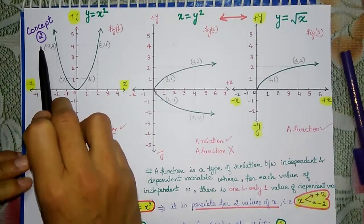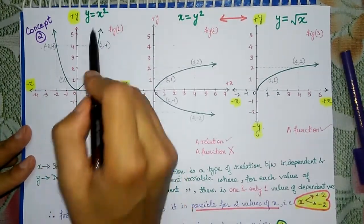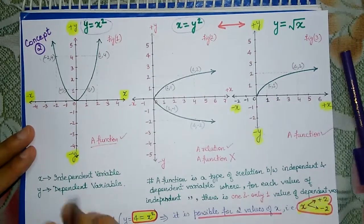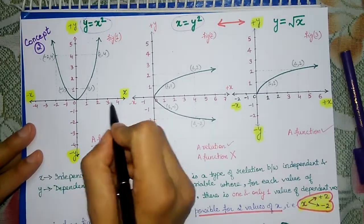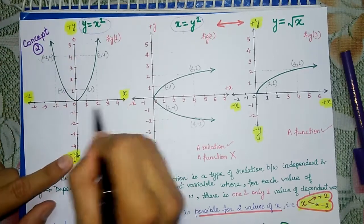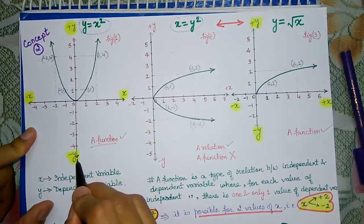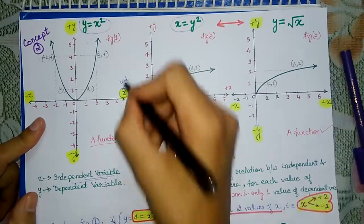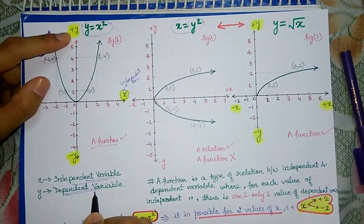Now here is Concept Number 2. In this concept we study graphs related to parabolas. You have to study two parabolas: y is equal to x squared, and x is equal to y squared. These graphs are commonly discussed. There is a number line called the x-axis and another called the y-axis. On the x-axis, positive is to the right and negative to the left. On the y-axis, up is positive and down is negative.